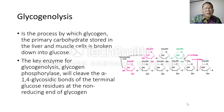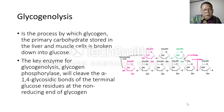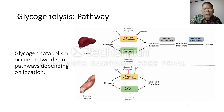Glycogenolysis is the process by which glycogen — the primary carbohydrate stored in liver and muscle cells — is broken down into glucose. The key enzyme for glycogenolysis is glycogen phosphorylase. Glycogen phosphorylase cleaves the alpha-1,4 glucosidic bond of the terminal glucose residue at the non-reducing end of glycogen.